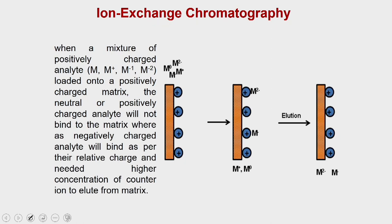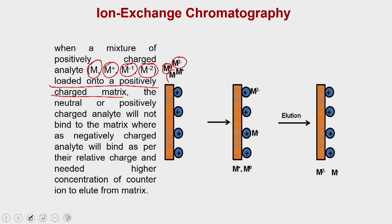Let us see how ion exchange chromatography separates molecules of different charges. In this example we have three proteins: M (neutral), M+ (one positive charge), M− (one negative charge), and M2− (two negative charges). You load this complex mixture onto a positively charged matrix.